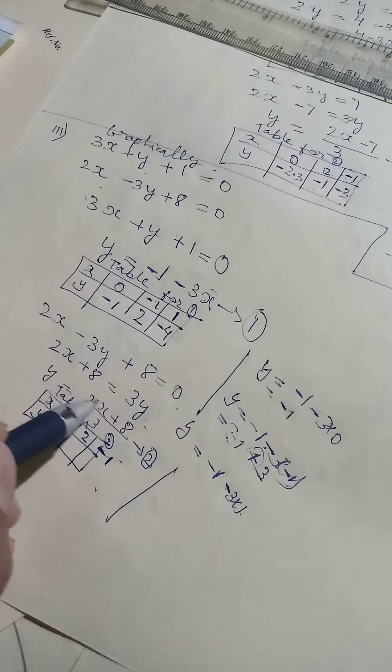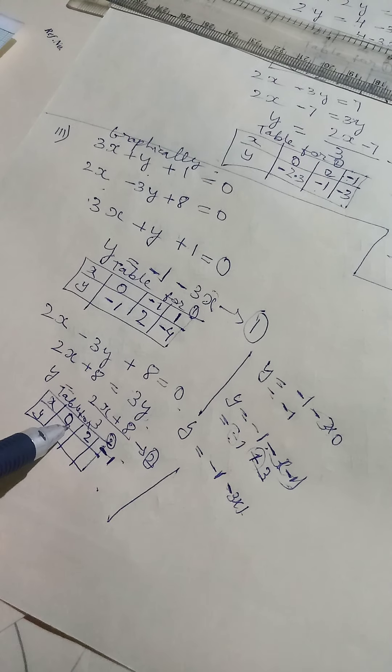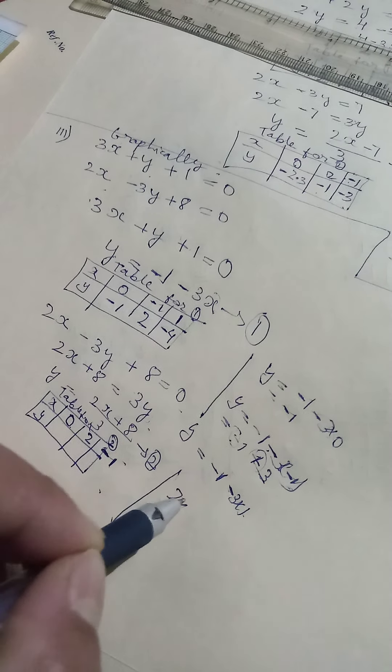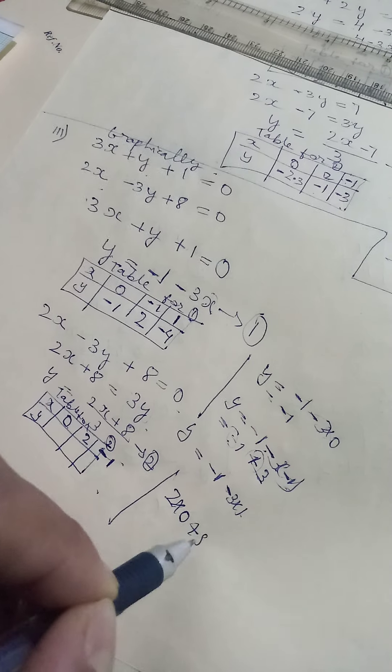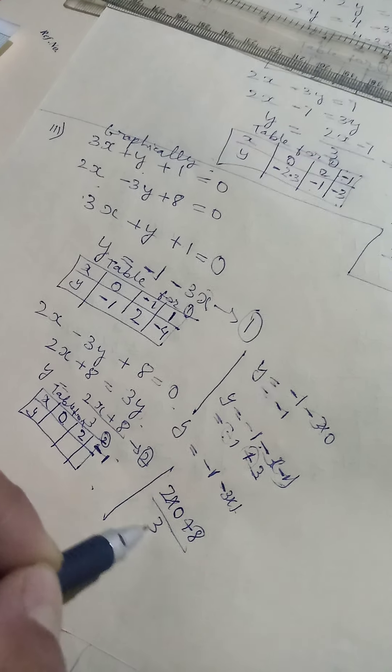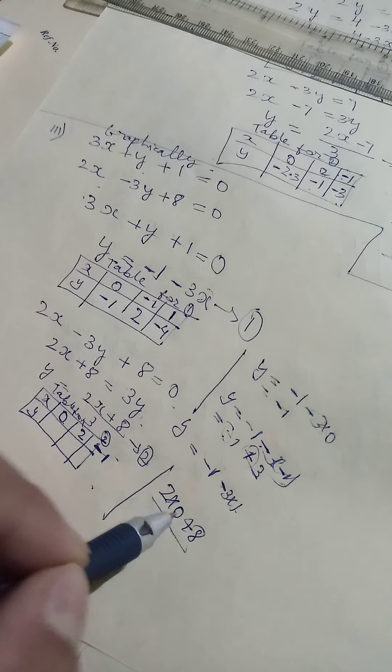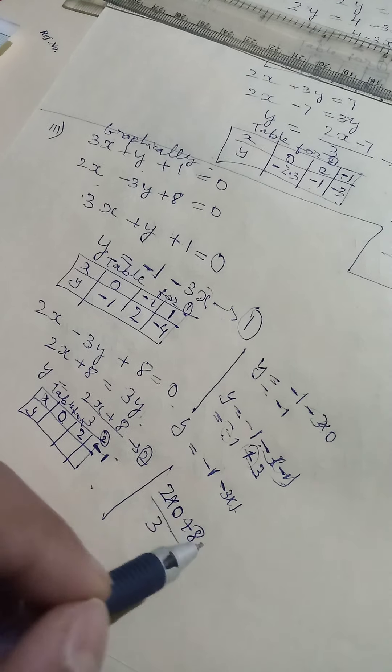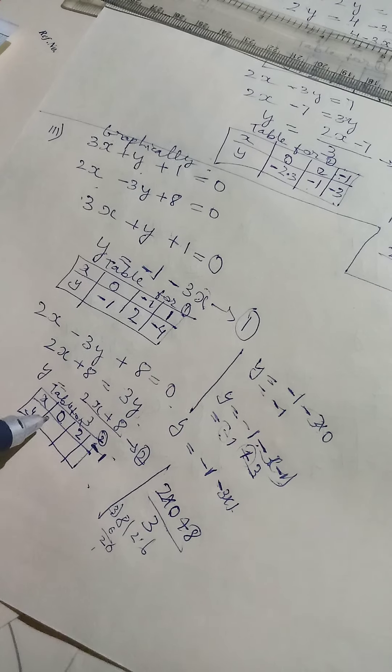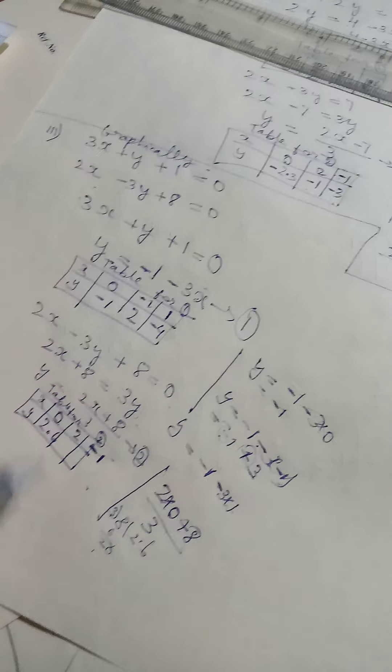So then here we have, in place of X, we'll put 0. 2 into 0 plus 8 divided by 3. 2, 0 are 0, 0 plus 8, we have 8 divided by 3. 3 into 2, near to 6. 2, we put decimals. 3 into 6 will be 18. We should take only one number after decimal.